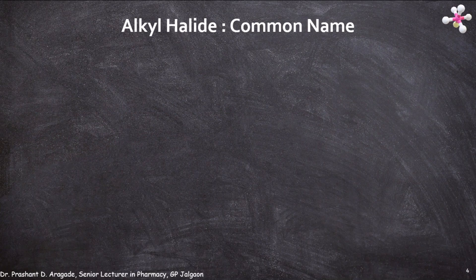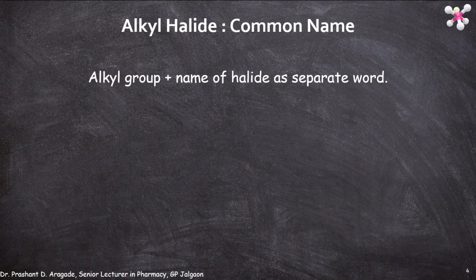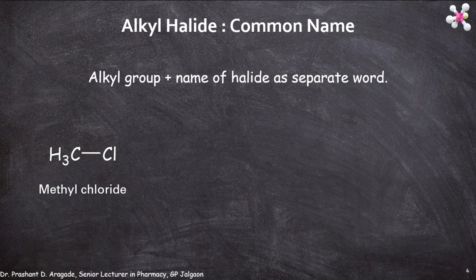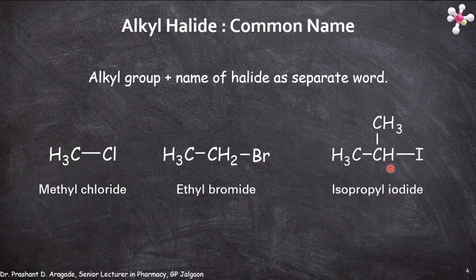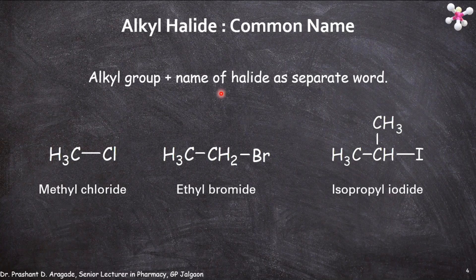Let's discuss the common name of alkyl halides. The alkyl group plus the name of the halide is written as a separate word. For example, methyl chloride — this is a methyl group with attached chlorine, so it becomes chloride. Another example: ethyl bromide, as bromine is attached to the ethyl group; and isopropyl iodide, as iodine is attached to the isopropyl group. Commonly, alkyl halides are named as the alkyl group name plus the halide group name.